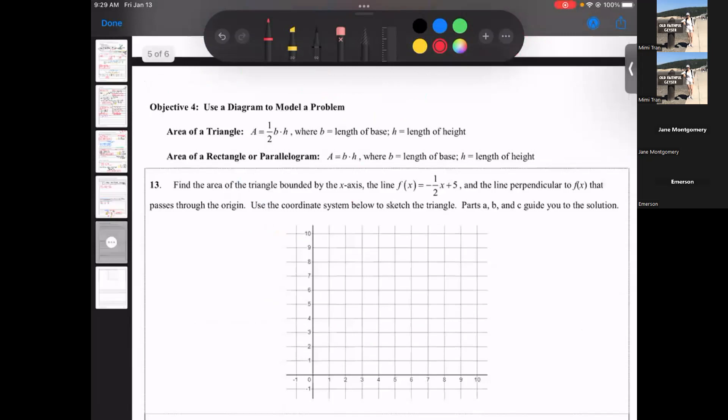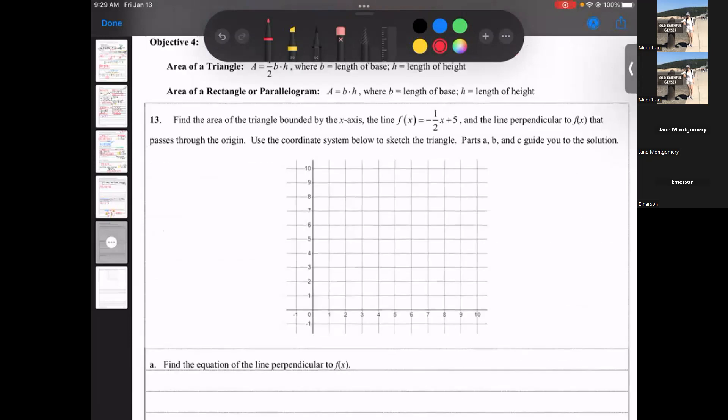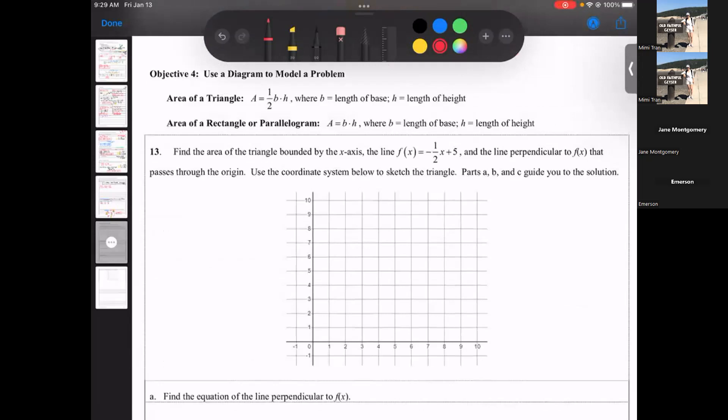I'm just gonna do number 13, number 14 you do on your own. The area of a triangle, any triangle, it doesn't have to be a right triangle. So for any arbitrary triangle, your formula is a equals one half base times height. b is base, h is height. For rectangle or parallelogram, the area is just the width times the length. Here they use a, b, h. I use width and length, is that okay, w and l. I thought it's just more intuitive.